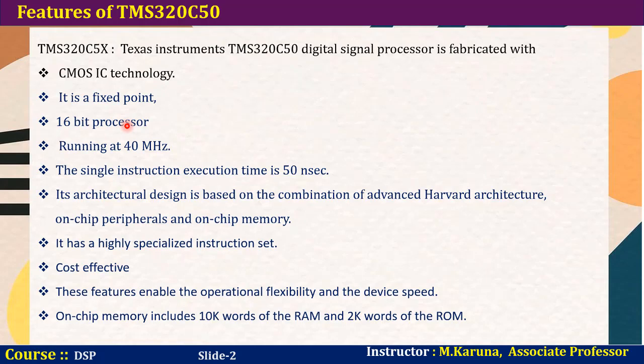The TMS320C50 was fabricated with CMOS IC technology. It is a fixed-point processor and performs operations on 16-bit data. The operating frequency of this processor is 40 MHz and single instruction execution time is 50 nanoseconds. Its architecture is based on the combination of advanced Harvard architecture, on-chip peripherals, and on-chip memory. It has a highly specialized instruction set and is also cost-effective. On-chip memory includes 10K words of RAM and 2K words of ROM.